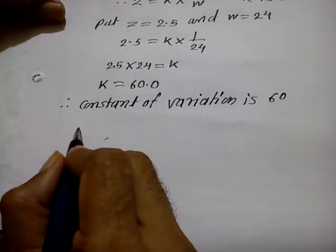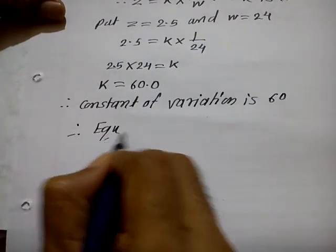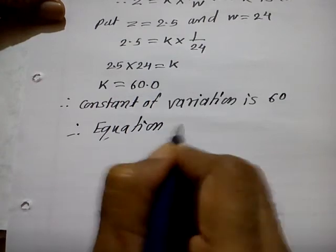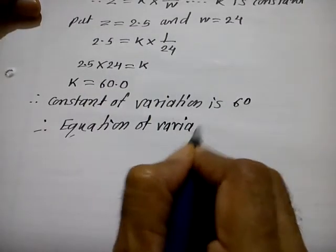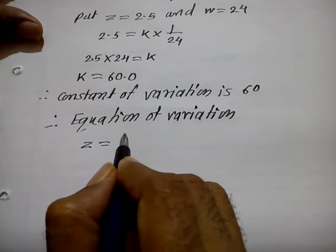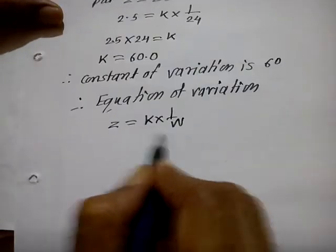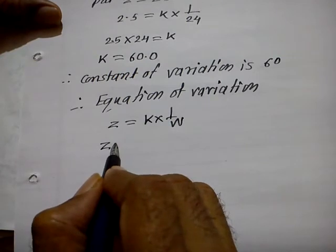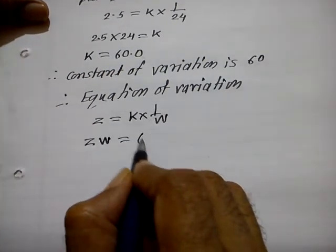The equation of variation: z is equal to K into 1 upon w. Therefore z into w is equal to K, which is 60. So the equation of variation is z into w is equal to 60.